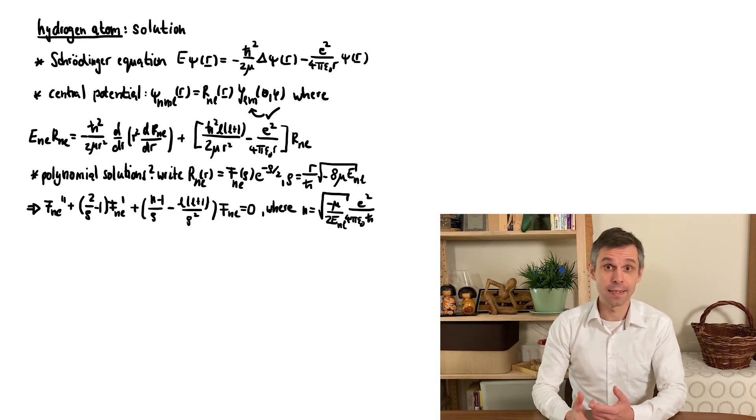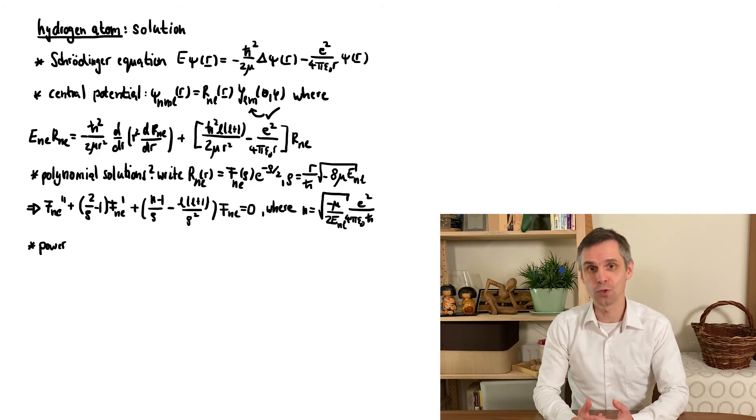At this point, n isn't constrained, but this changes when we follow the steps of the harmonic oscillator and search for solutions in the form of a power series. The picture that then unfolds is exactly the same.